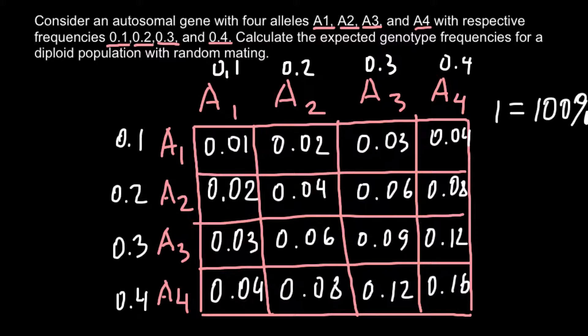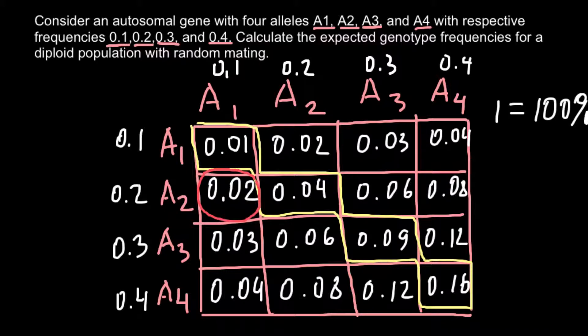I want you to pay attention that these combinations in the middle would be unique, and combinations on both sides would repeat. For example, as you see here, we have a combination of allele A1 and A2, but here we also have the same combination that is A1A2.